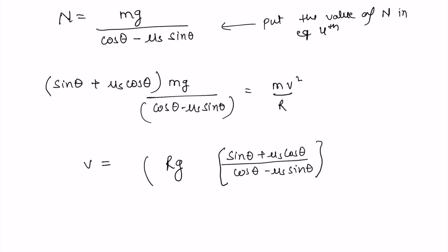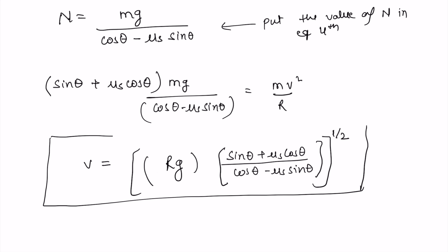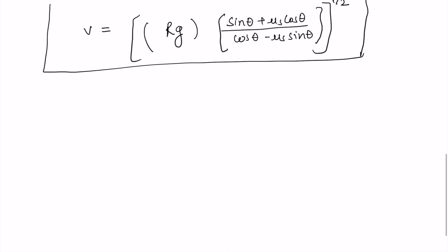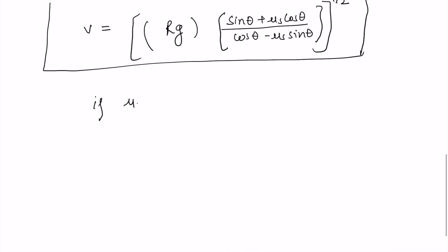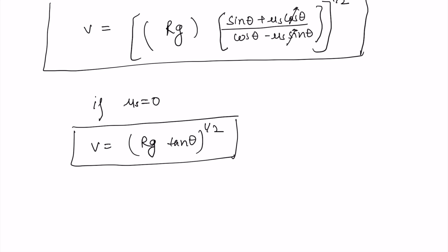So this is the value of velocity for the motion of a car on a banked road. If we consider the static coefficient of friction μₛ equals zero, then this reduces to v equals √(rg tanθ), since sinθ/cosθ equals tanθ. This is the reduced equation.